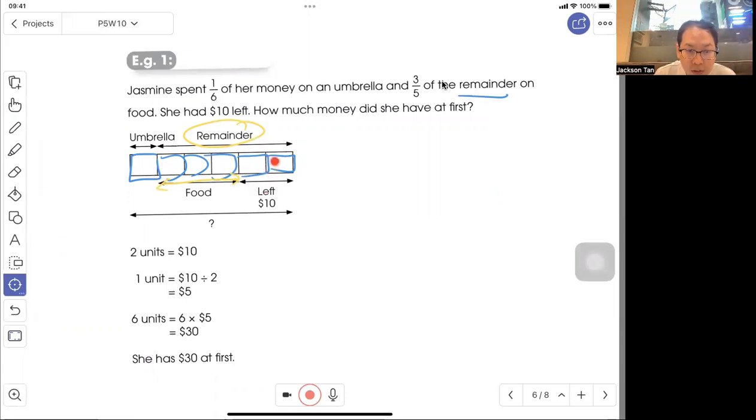You can see that 2 units equal $10. So 1 unit equals $5. There are 6 units in total. 6 × $5 = $30. She had $30 at first.